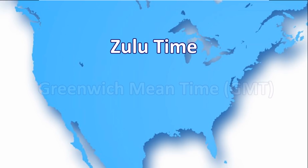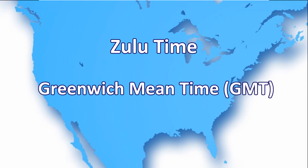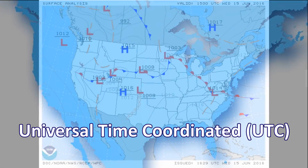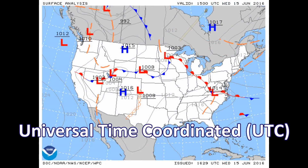Zulu time is the same thing as GMT, or Greenwich Mean Time. It's also called UTC, for Universal Time Coordinated. You'll see this shown in weather charts.